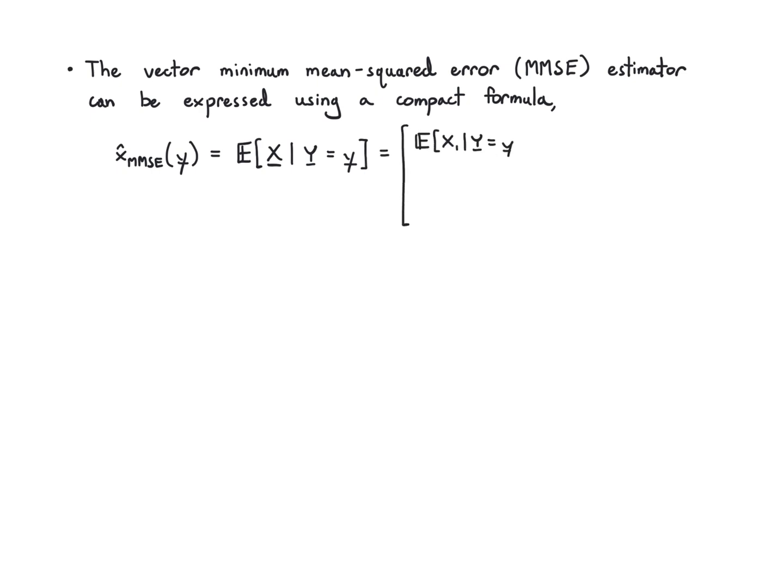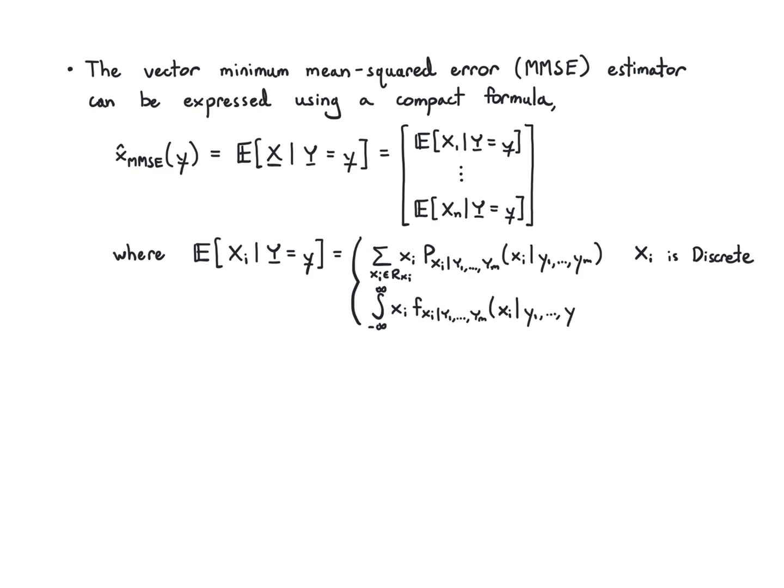The best possible thing we can do is the vector MMSE estimator, and that has a nice compact formula. This is the optimal thing to do, and we can just write down what it is. I can write conditional expectation of x given y, taking the value y. That opens up into this vector with individual conditional expectations for x1 up to xn. They each take y vectors fixed, and each just looks like an average over the conditional PMF in the discrete case for x, and this integral using the conditional PDF in the continuous case. There's some extra notation, but the concept is basically the same - you just take the average holding y fixed.